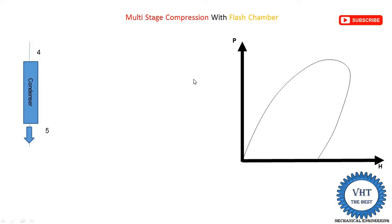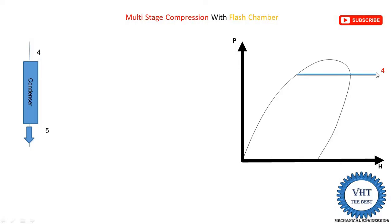On the p-H diagram, the y-axis is pressure and the x-axis is enthalpy. The saturation curve has a critical point at the top; to the left is the saturated liquid line, to the right is the saturated vapor line. Point four is in the superheated vapor region at high pressure. Point five is on the saturated liquid line at the same high pressure. So we draw a horizontal line from point four to point five — four is vapor, five is liquid.